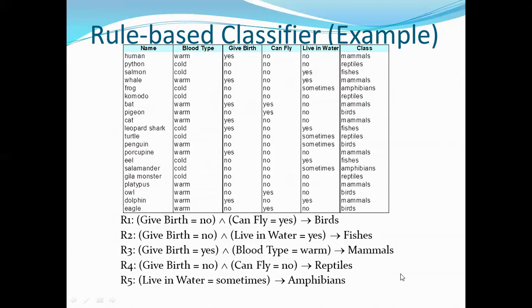Whatever rules you come up with in the learned model, you can apply them to all records and find out the predicted classes. That is what the rule-based classifier does.